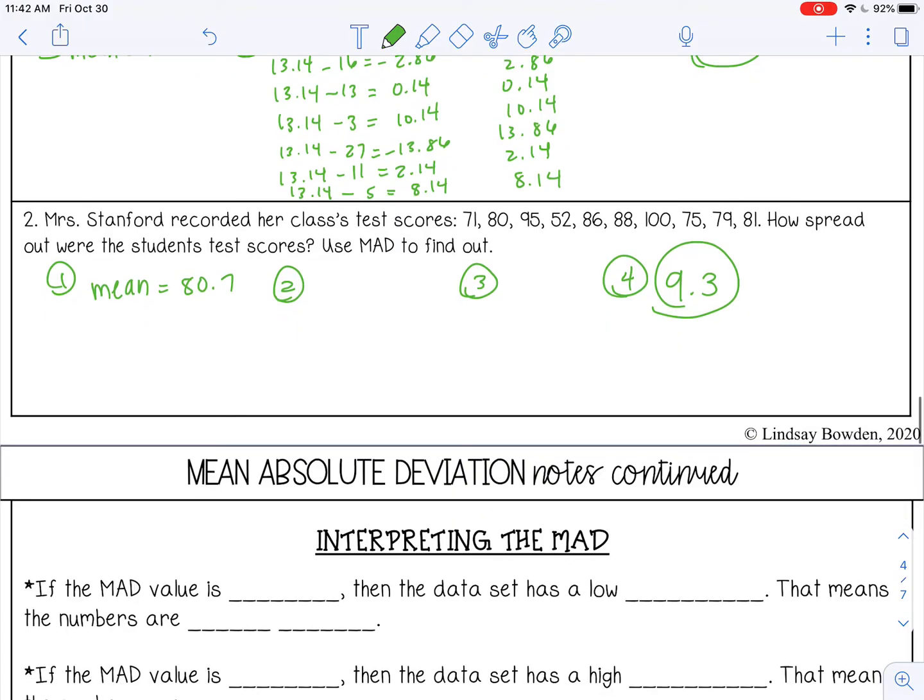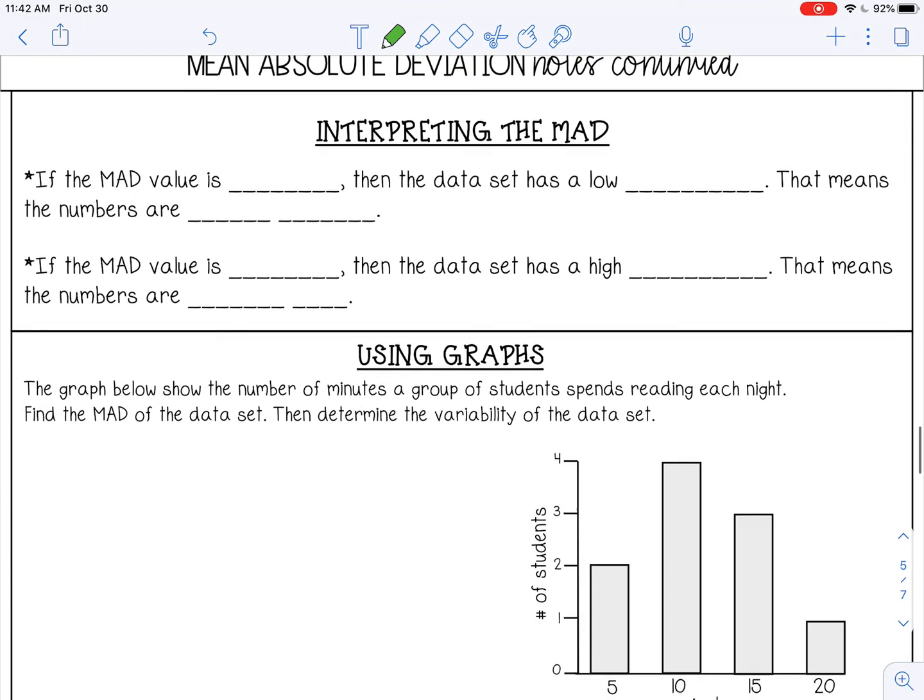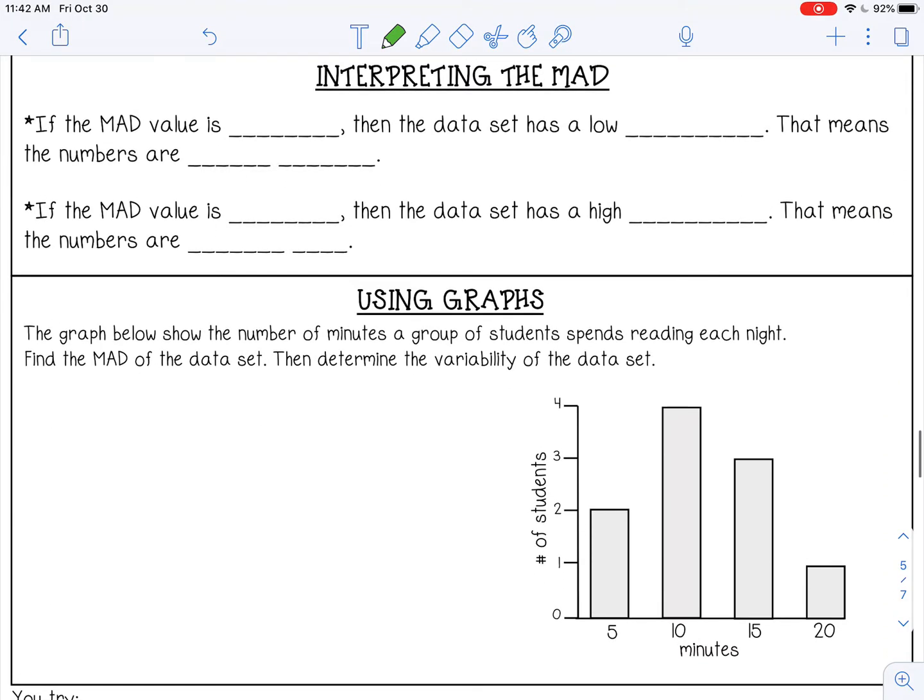Let's continue on and talk about how to interpret the mean absolute deviation. So if the MAD value is low, a small number, then the data has low variability. That means the numbers are pretty close together. If the MAD value is high, then the data set has a high variability, which means the numbers are spread out.